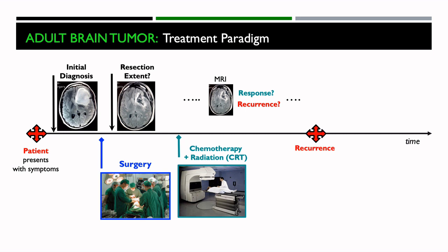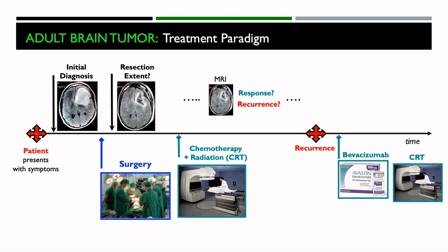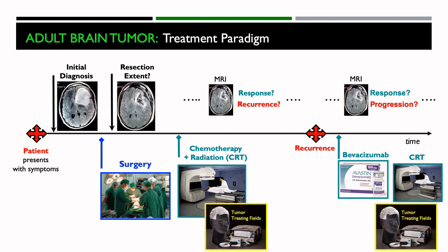If there is recurrence, there are other treatment options including bevacizumab or Avastin, and chemoradiation therapy. This is followed by MRI exams to again assess whether or not the patient is responding or is there tumor progression. Recently, tumor treating fields have been added to the treatment options both for newly diagnosed tumors and for recurrent tumors.